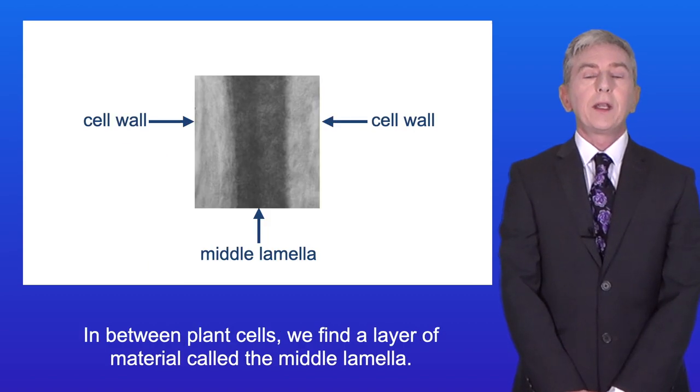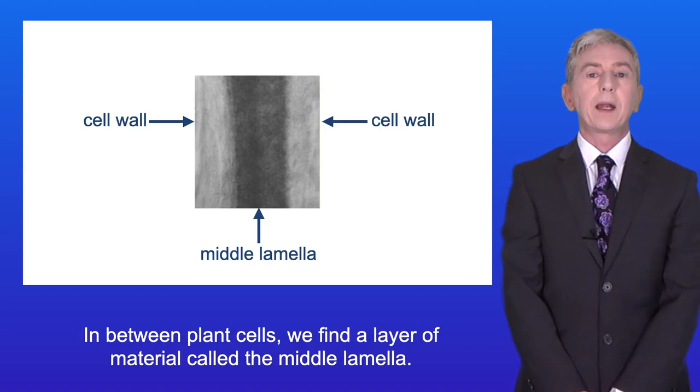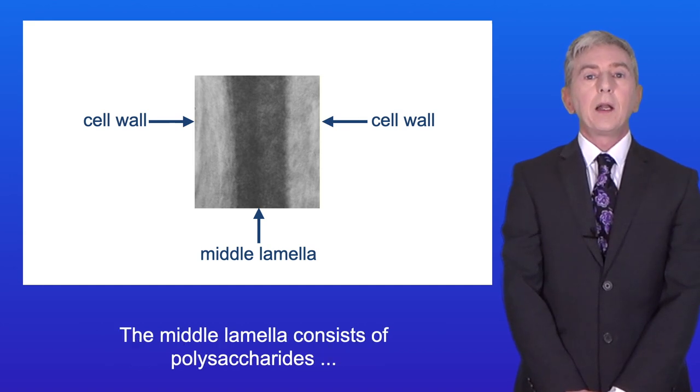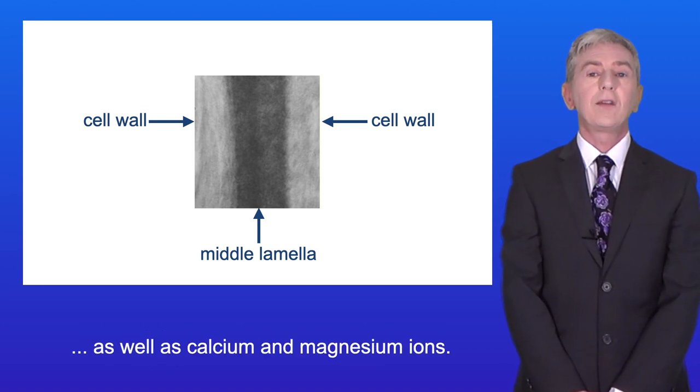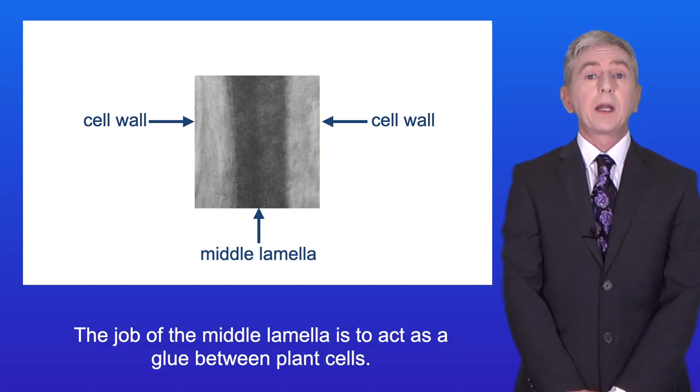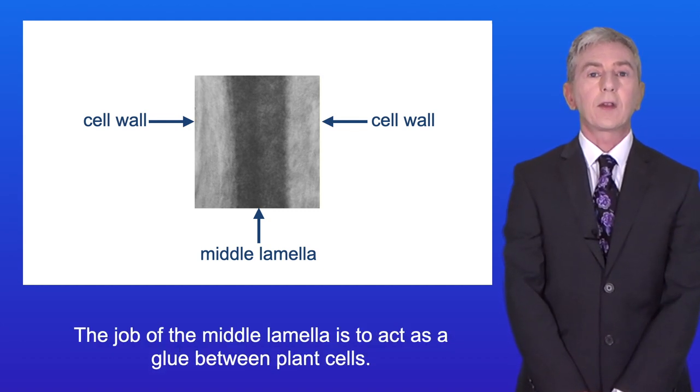Now in between plant cells we find a layer of material called the middle lamella. The middle lamella consists of polysaccharides as well as calcium and magnesium ions and the job of the middle lamella is to act as a glue between plant cells.